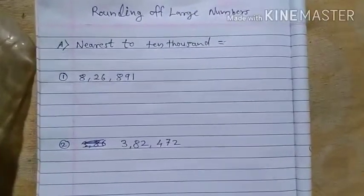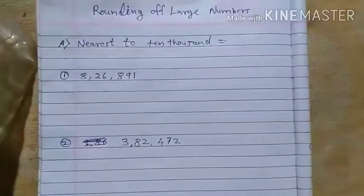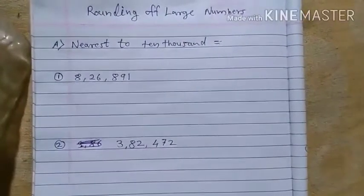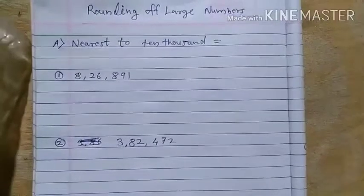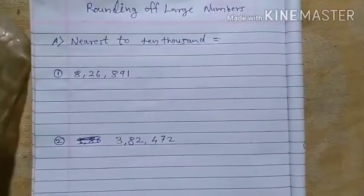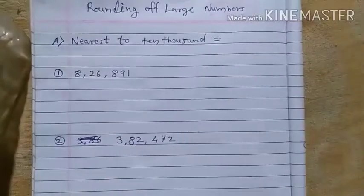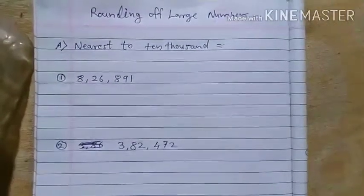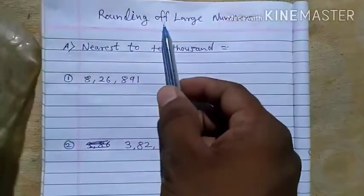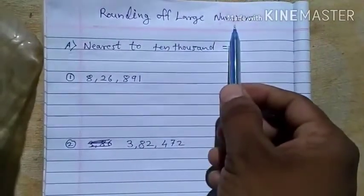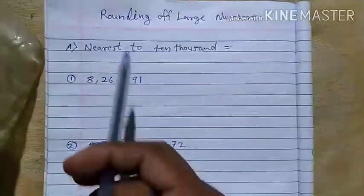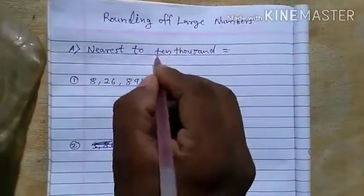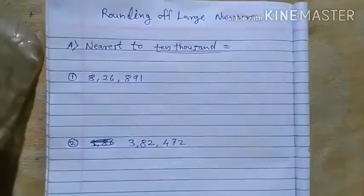Hello students. In the last few periods we learned about rounding numbers to the nearest ten, hundred, and thousand. Today we start rounding large numbers — firstly, we see nearest to ten thousand.